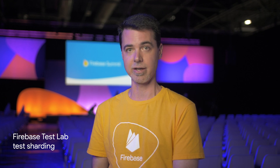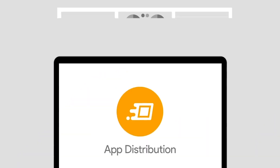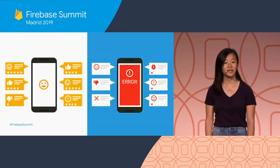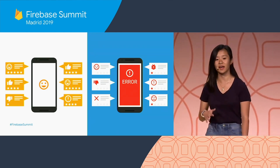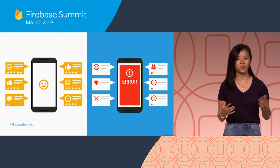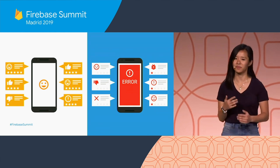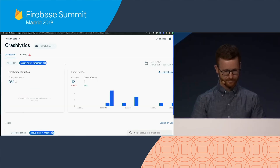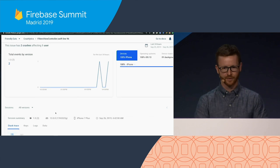At number three is Firebase App Distribution graduating to public beta. If you are a Crashlytics beta user, this is an evolution of that product. App Distribution makes it easy to run a private beta of your own Android or iOS app to selected users. It will then collect crash reports and allow users to give timely feedback.